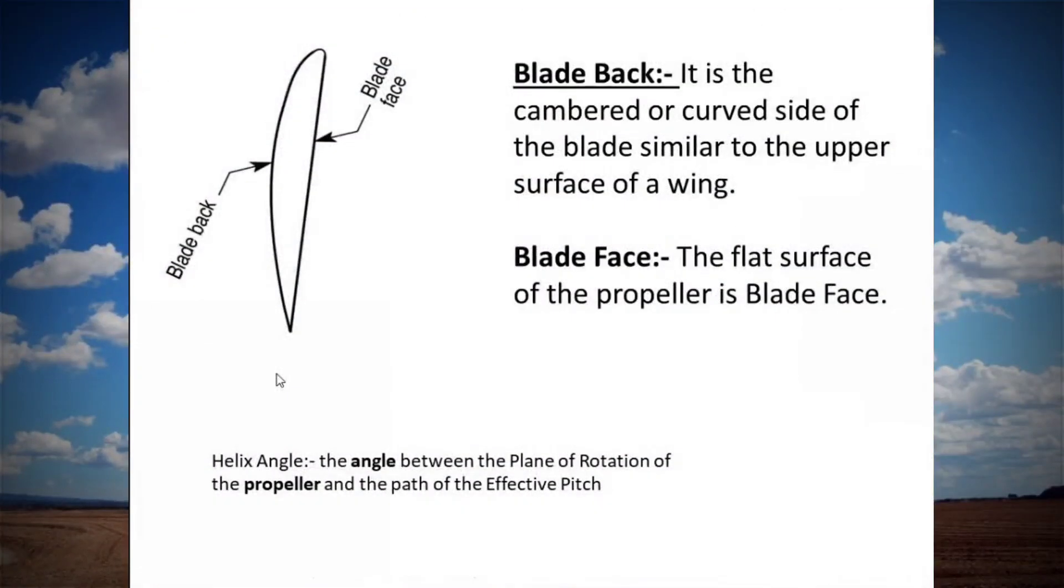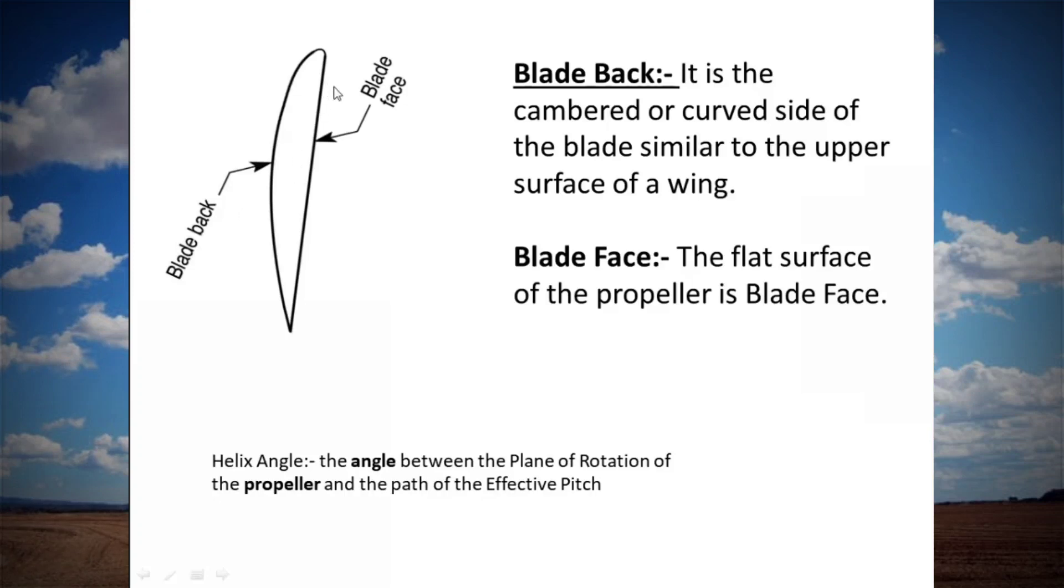Now let's discuss what is the blade face and what is the blade back. When we see the cross section of the propeller, we can see there is one flat portion and there is one curved portion. This flat portion is blade face and another curved portion is blade back. Why we say this is the blade face? The answer is simple: our pilot can see the flat portion from the cockpit, that's why it is blade face and another is blade back.